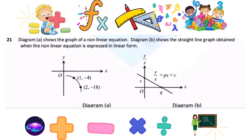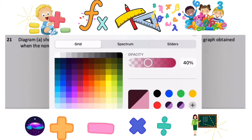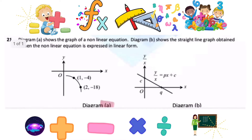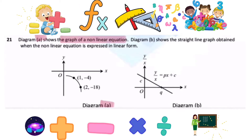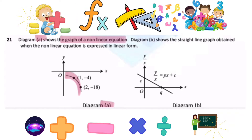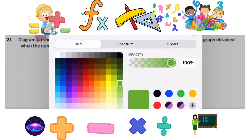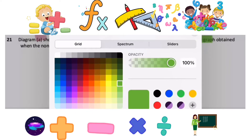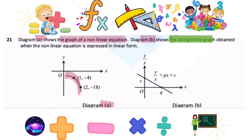Let's go through this question. Diagram A shows a graph of a non-linear equation — this is a non-linear equation. Diagram B is a straight line graph, so it is a linear equation.